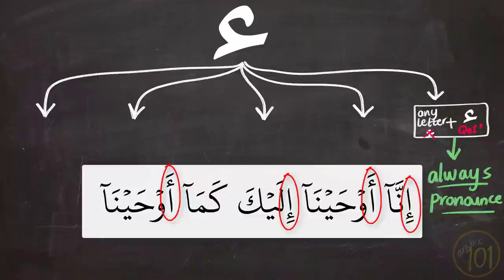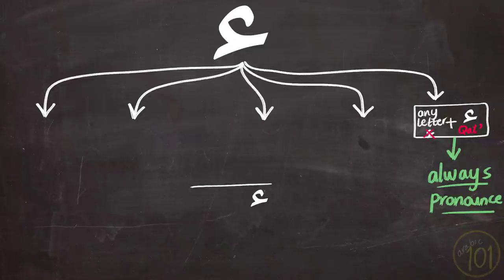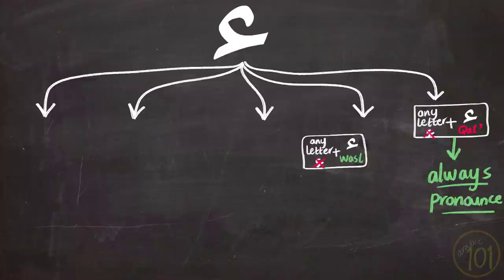The second case is with words that start with Hamza al-Wasl and after it comes any letter except for another Hamza, like in this example.